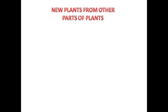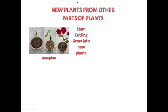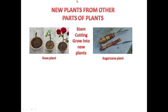As mentioned earlier, there are two ways to grow new plants. The first way — growing from seeds — has been covered in detail. The second way is to grow new plants from parts of the plant. For example, the stem of a rose plant is used to grow a new rose plant, and a sugarcane stem can also be used to grow a new sugarcane plant.